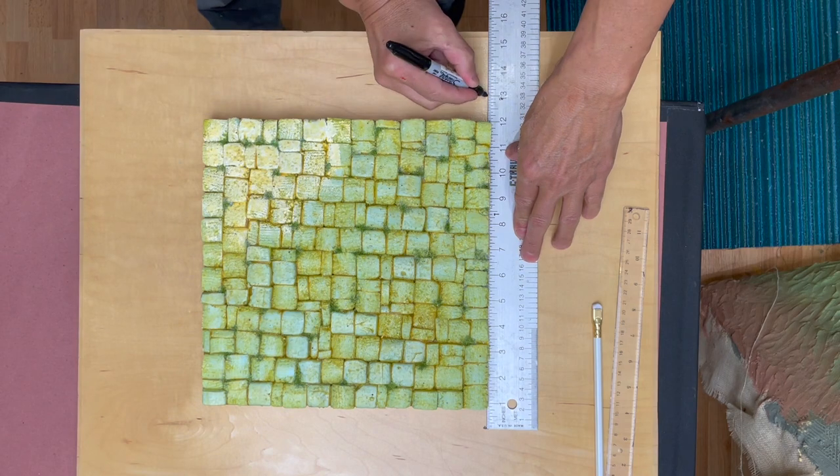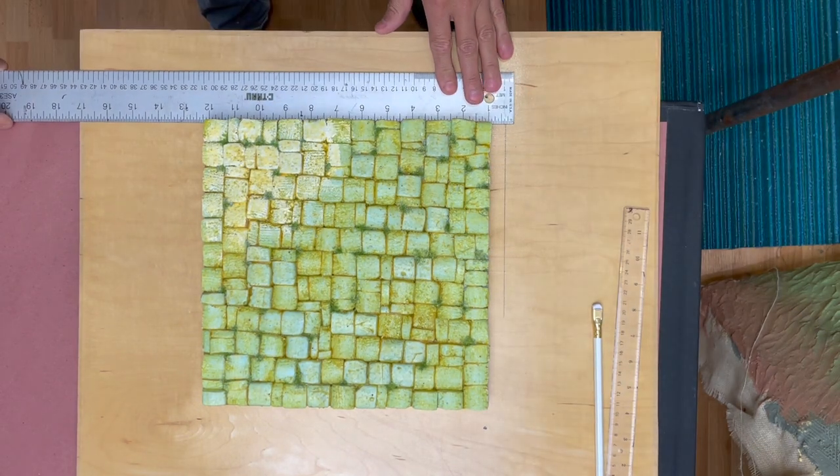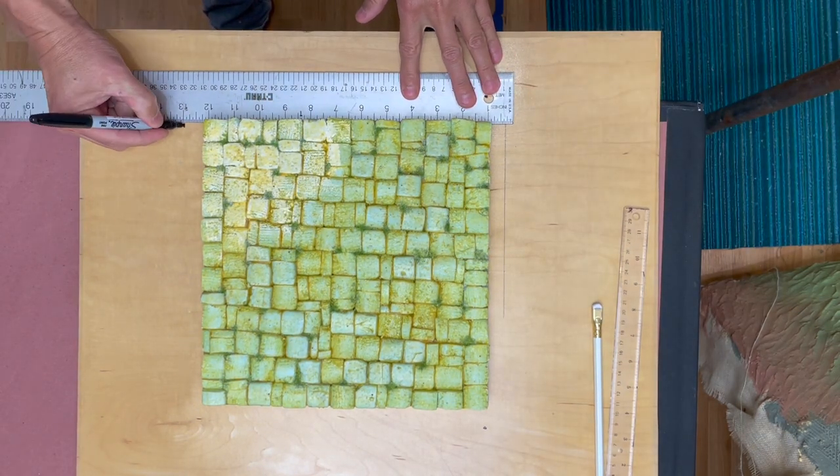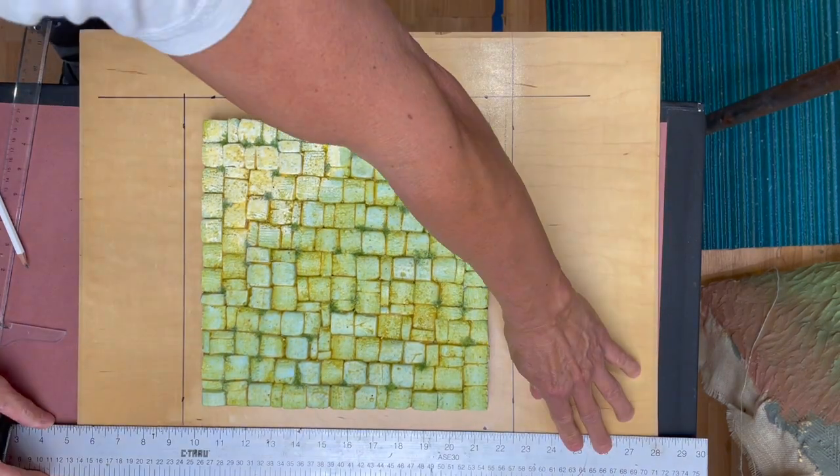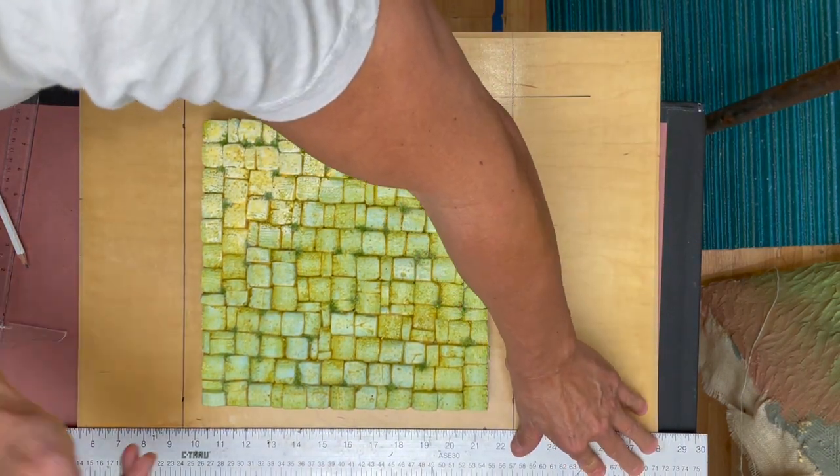The cobblestone pad is an 11 inch by 11 inch square. I want an inch gap between the piece and the mold box so I'm drawing a 13 by 13 inch square around the piece that I can align my mold box with.